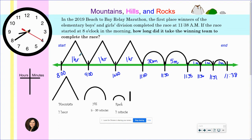So now I have my rocks, my hills and my mountains. Now I am going to add up my hours together, my minutes together and then that will tell me how long it took them to complete the race. So here I have 1 plus 1 plus 1. And on this side here I have 30 minutes plus 5 minutes plus 1 plus 1 plus 1.